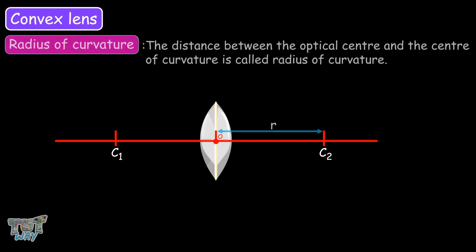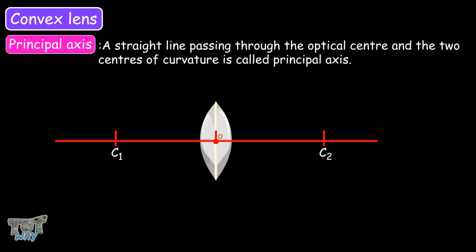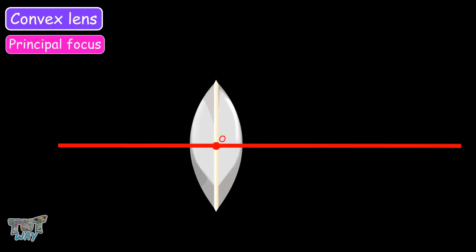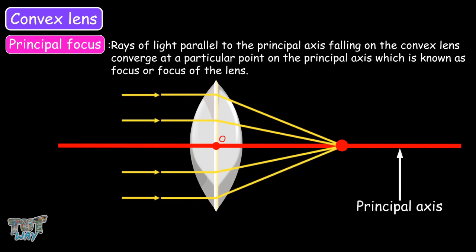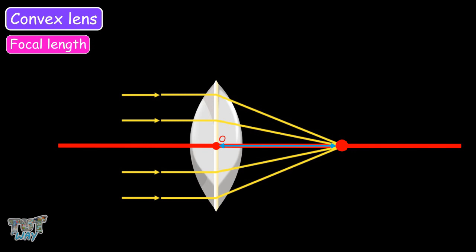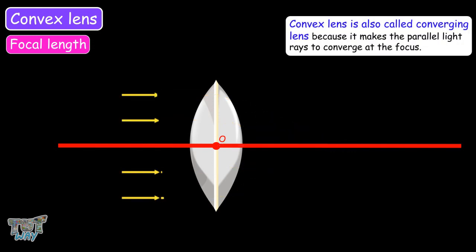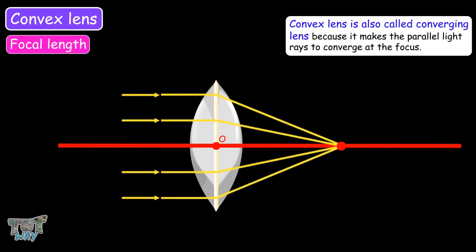A straight line passing through the optical center and the two centers of curvature is called the principal axis. Rays of light parallel to the principal axis falling on the convex lens converge at a particular point on the principal axis, which is known as the focus of the lens. The distance of the principal focus from the optical center is called the focal length. Convex lenses are called converging lenses because they make parallel light rays converge at the focus.